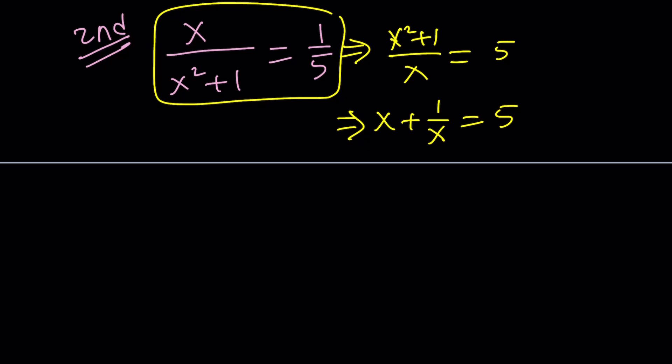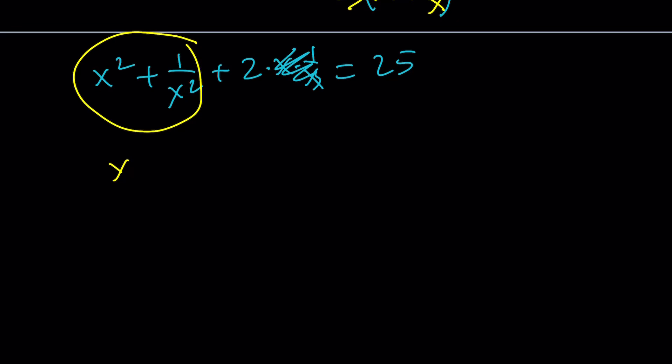And now at this point, since we want to get to the fourth powers, we're going to square both sides. That gives us x squared plus 1 over x squared plus 2ab is going to give us 2 times x times 1 over x. But you can cancel them out. And that gives us 25. And then this expression, if you subtract 2 from both sides, you get x squared plus 1 over x squared equals 25 minus 2, which is 23.